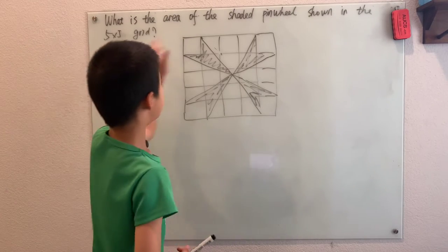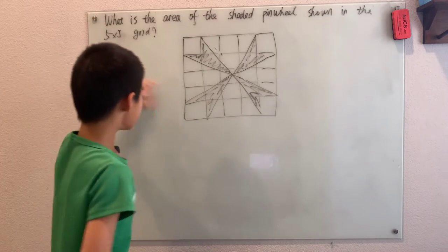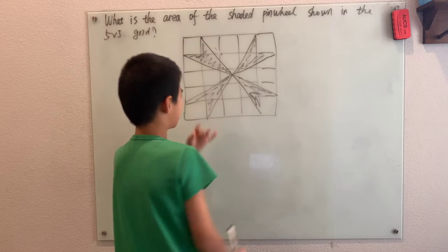What is the area of the shaded pinwheel shown in the 5x5 grid? Okay, so this is kind of a weird, art-like shape.